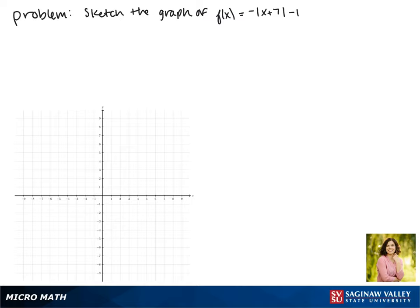Today we'll be graphing the function f of x equals the negative absolute value of x plus 7 minus 1.